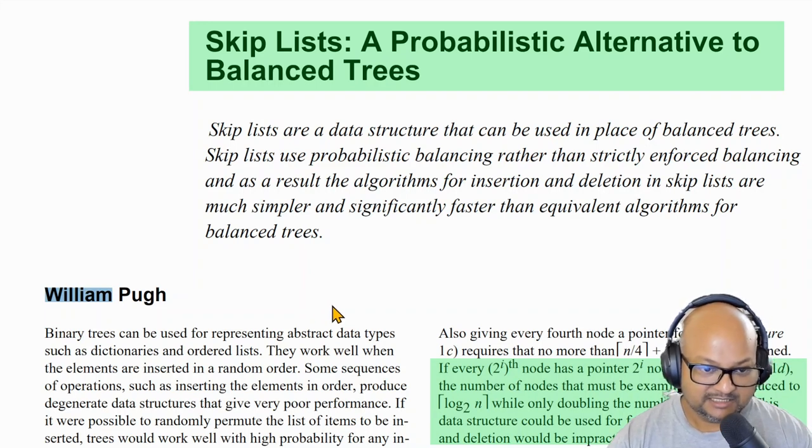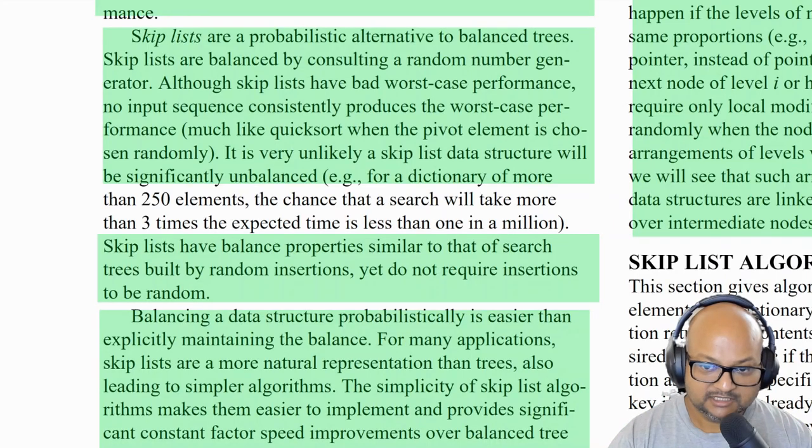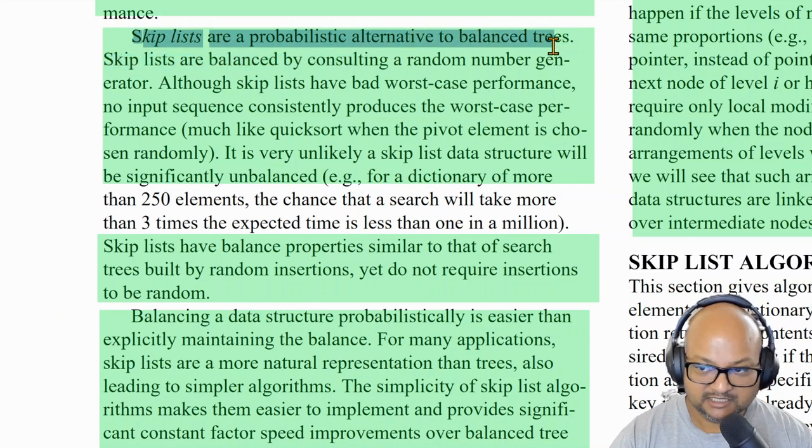Whereas skip lists do what balanced trees can do—which is fast lookups, insertions, and deletions—but in a simpler manner. As the author says, skip lists are a probabilistic alternative to balanced trees.